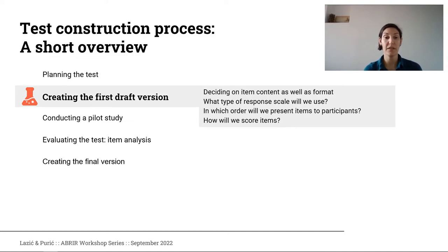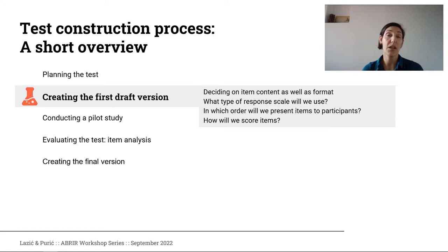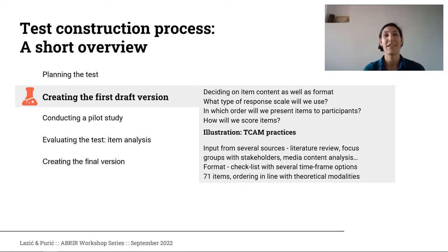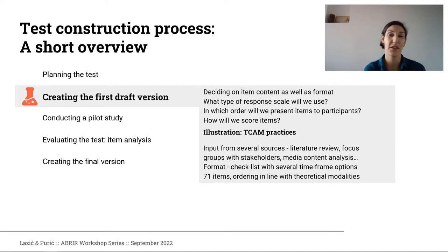In creating the first draft — the most creative part of the process — we need to decide what will be the format of our items. Are we going to ask participants open-ended questions? Are we going to provide them with a scale? What will be the scale options? In which order will we present items? How will we score them? For creating the inventory of traditional complementary and alternative medicine practices, we took information from several sources, including reviewing existing literature and performing media content analysis to identify which practices were promoted in media.